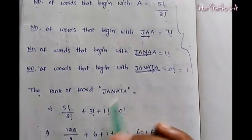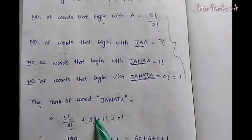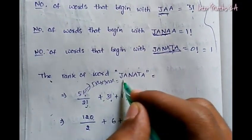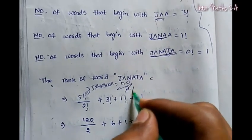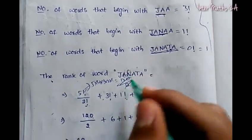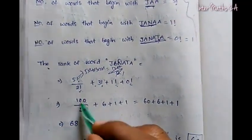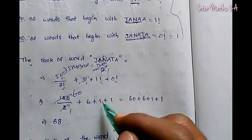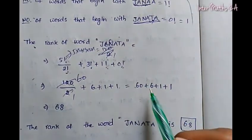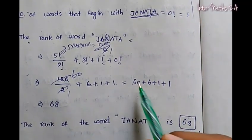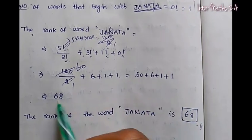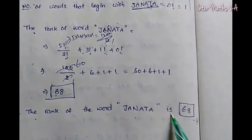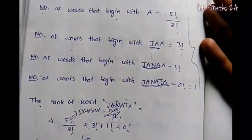Therefore, the rank of the word JANATHA is equal to 5 factorial divided by 2 factorial, plus 3 factorial, plus 1 factorial, plus 0 factorial. So 5 factorial is 5 into 4 into 3 into 2 into 1 = 120, divided by 2 = 60. Then 60 plus 6 plus 1 plus 1 equals 68. So the rank of JANATHA is 68.